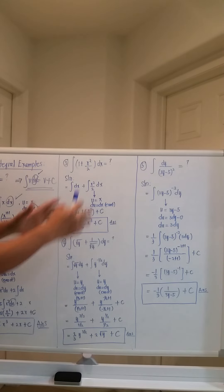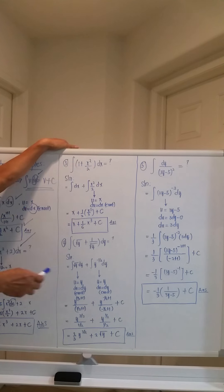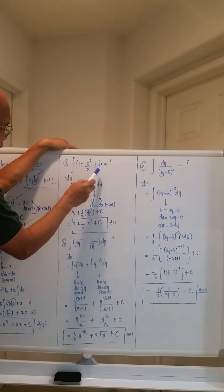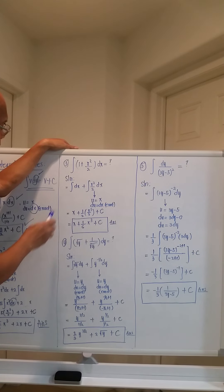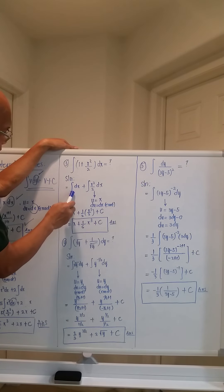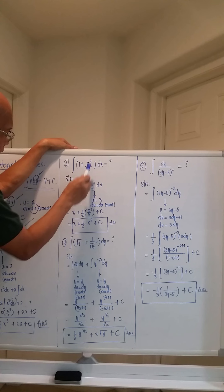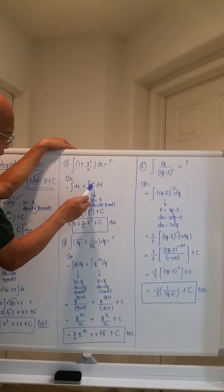Problem number three: what will be the integral of the quantity (1 + x²/2) dx? On first look it seems complicated, but it's not. The obvious solution is to expand first. One times dx is just the integral of dx. Then plus x²/2 times dx, which becomes the integral of x²/2 dx.